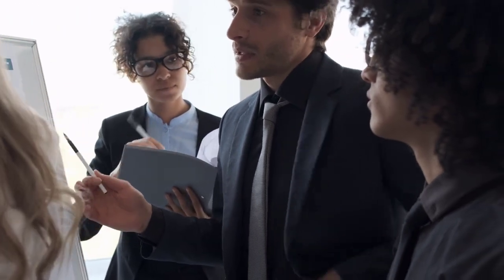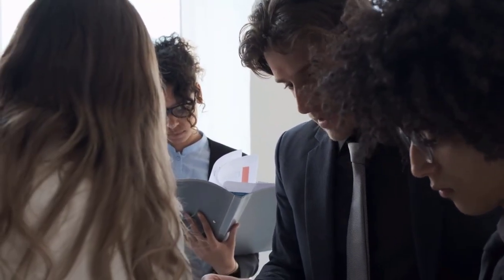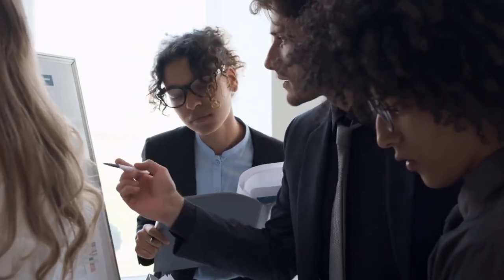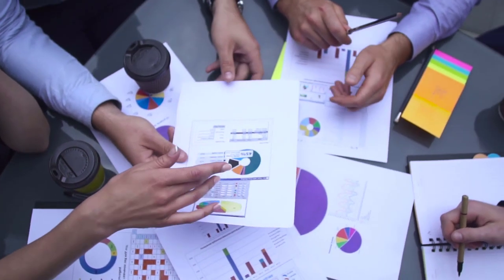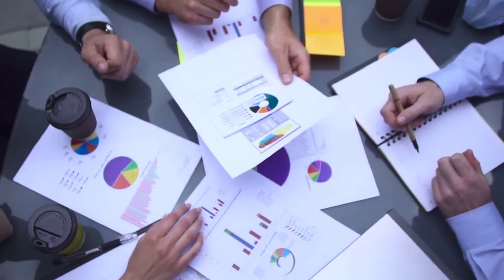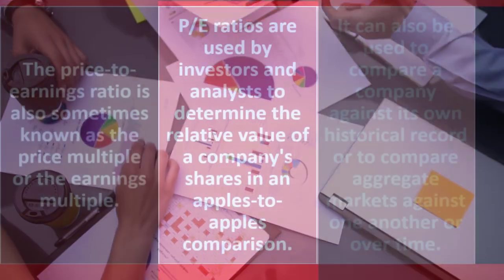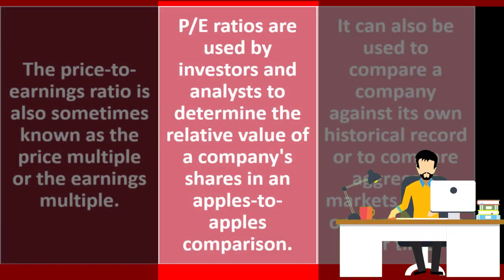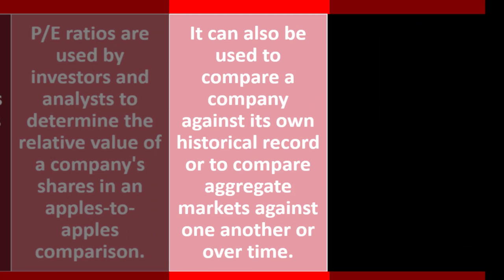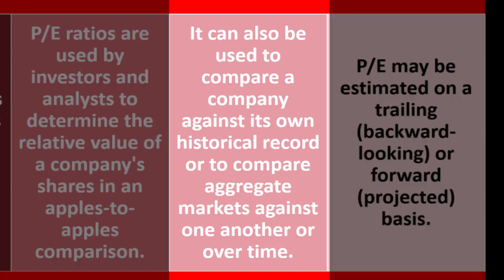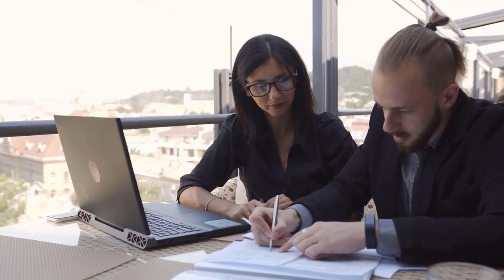Ratios help us do comparisons in ways we couldn't do otherwise — similar to measuring job performance of athletes. The P/E ratios are used by investors and analysts to determine the relative value of a company's shares in an apples-to-apples comparison. We want to compare across different companies, looking at value and trying to determine if the price is appropriate. It can also be used to compare a company against its own historical record, or to compare aggregate markets against one another over time.